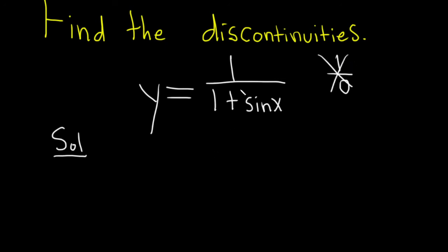So to find out where it's not continuous, we'll start by taking the bottom piece here and setting it equal to zero. So we have 1 plus the sine of x and that's equal to zero.